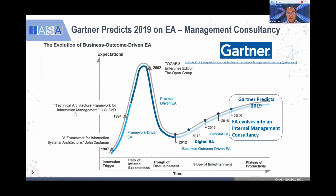In 2019, Gartner predicted that an organization that has enterprise architecture — the team should behave or serve senior management as an internal management consultancy. Management consultancy is very critical even today. Most organizations are engaging all the big players, but now with EA, the EA team can act as a management consultancy that provides services to the board of directors, because the EA team should know everything inside and out about the organization.